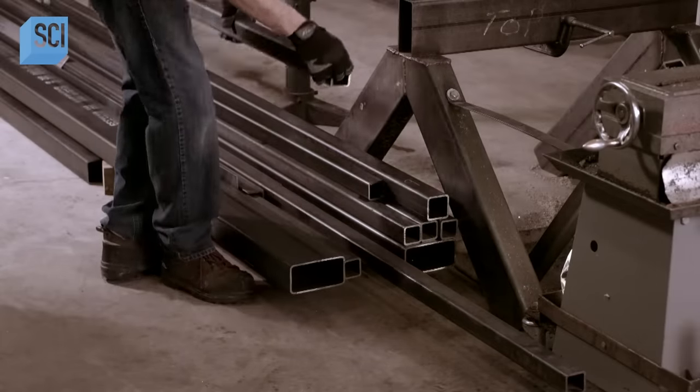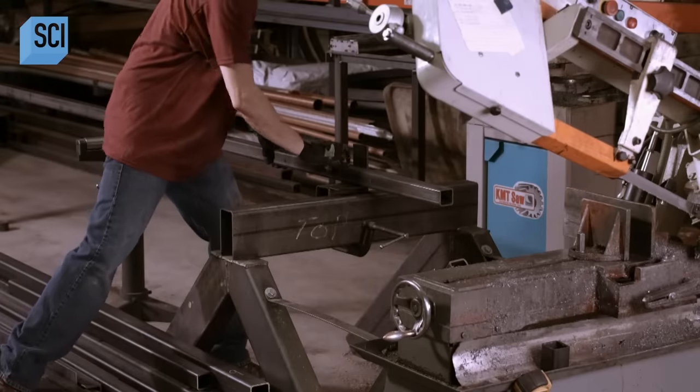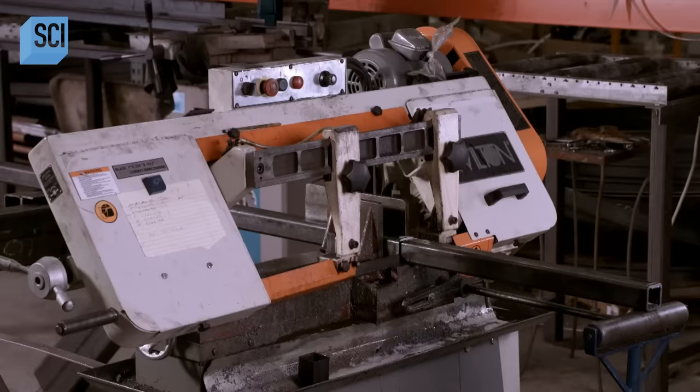Workers build the machine's frame out of tubular steel. The frame supports all the components, including two sealed vessels filled with carbon pellets.